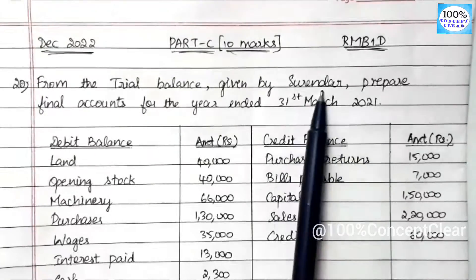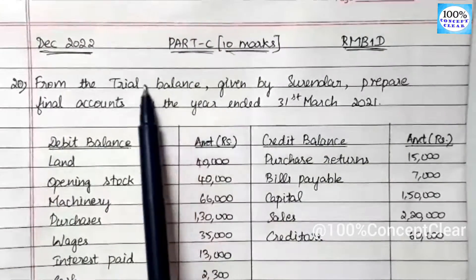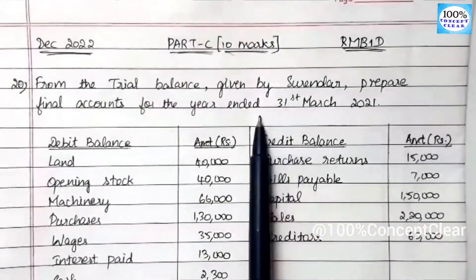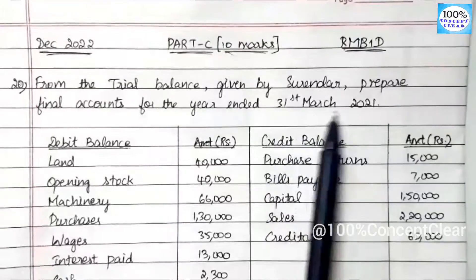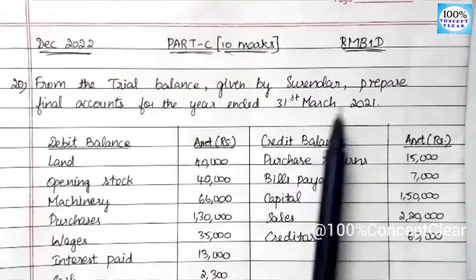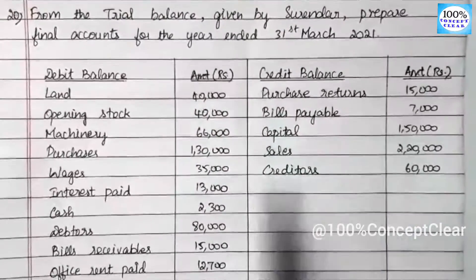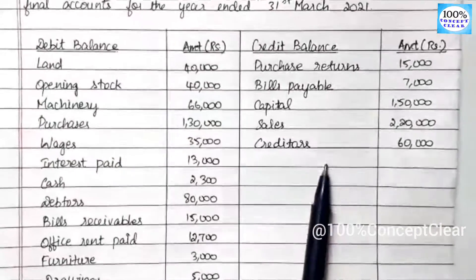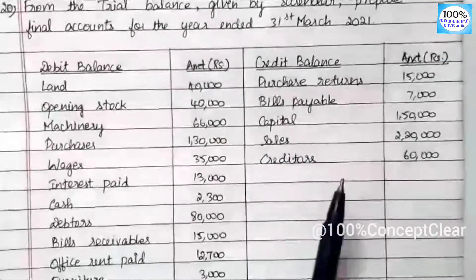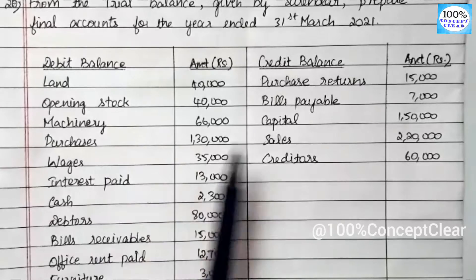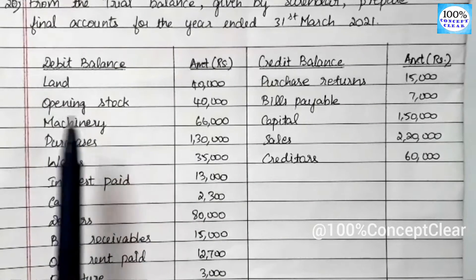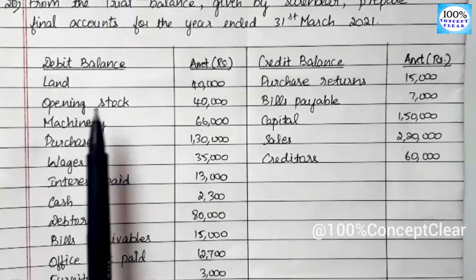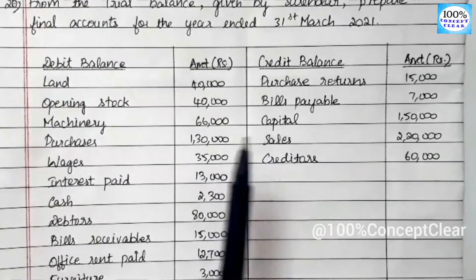We are going to study the trial balance of Surendar and prepare the final accounts for the year ended 31st March 2021. We will study the trial balance information and the trial balance sheet.